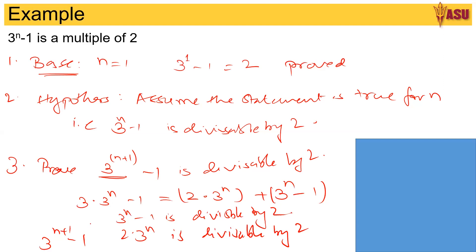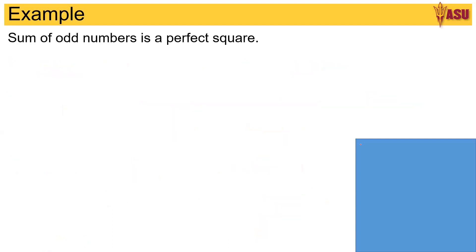So this is how we go about writing the proof of mathematical induction. Another quick example: the sum of odd numbers is a perfect square. That is, 1 plus 3 plus 5 plus ... plus (2n minus 1) is equal to n squared.